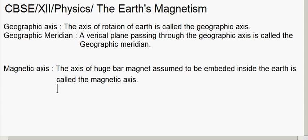Next, what is the magnetic meridian? A vertical plane passing through the magnetic axis of the Earth is called the magnetic meridian. These are important because the other terms we will define depend upon these quantities.